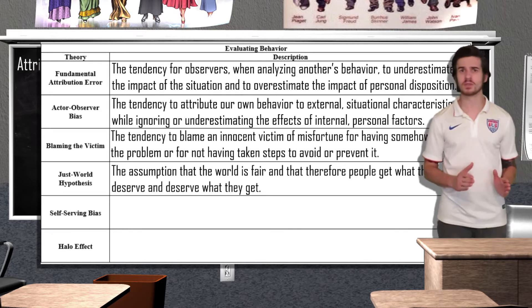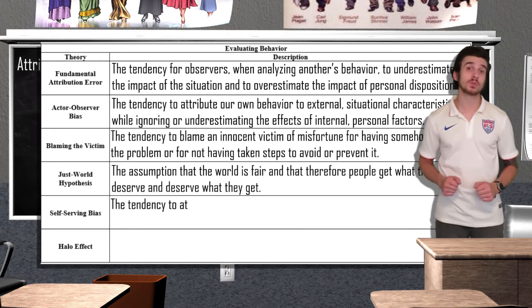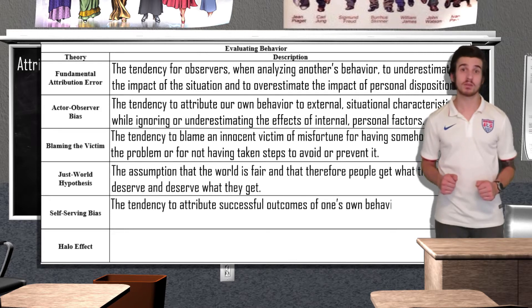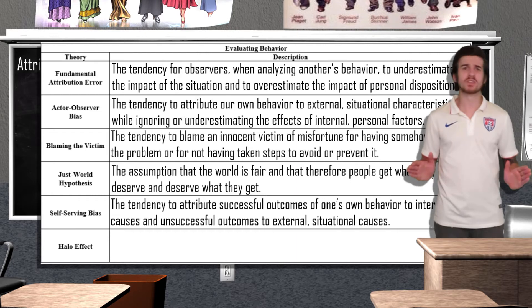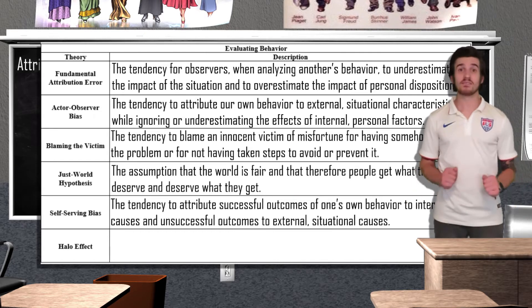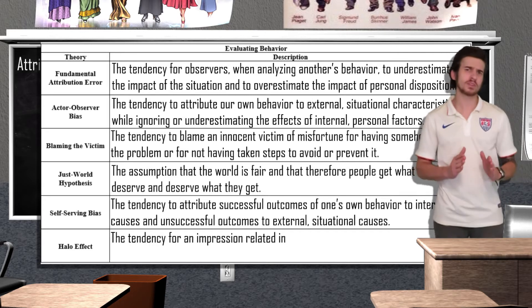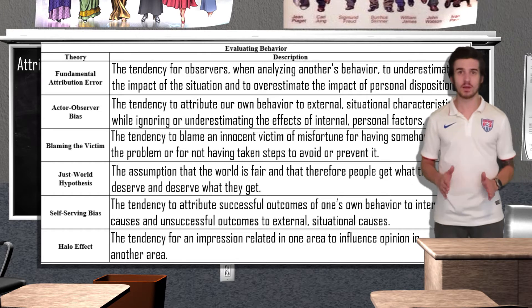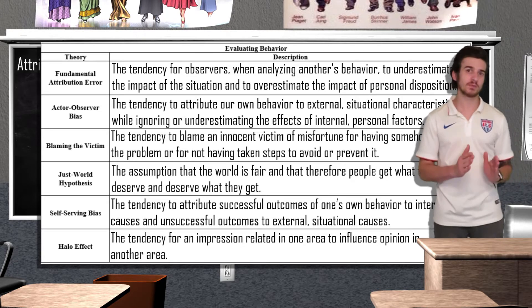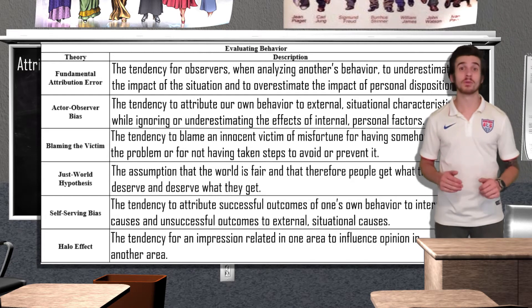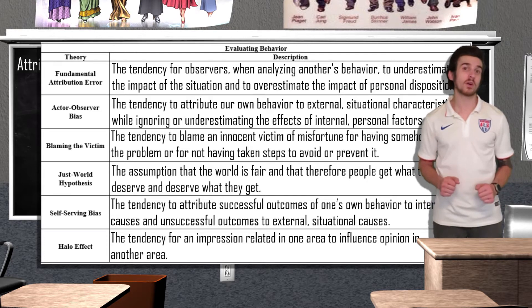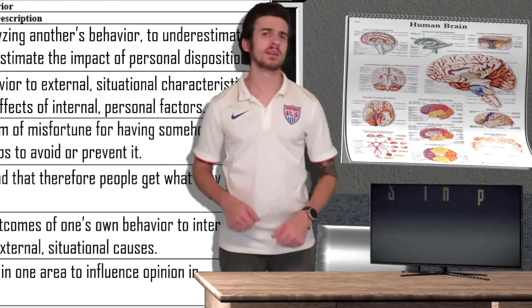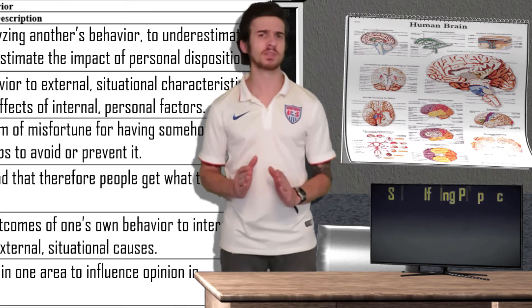Blaming the victim reflects the belief that since the world is just, the victim must have done something to deserve their misfortune. Next up, we have the self-serving bias, which is our tendency to attribute successful outcomes of one's own behavior to internal causes and unsuccessful outcomes to external situational causes. So when I win at something it's because of my skill, but when someone beats me, it's because they got lucky. And next up, we have the halo effect — the tendency for an impression created in one area to influence opinion in another area. Even though it's called the halo effect, it can either positively or negatively influence your opinion. For example, you might find the perfect car except for its ugly color, and that one negative quality might lower your overall opinion of the car even though it has most of the qualities you were looking for.